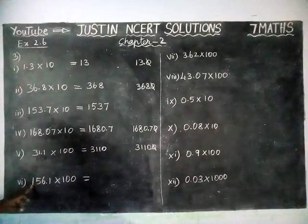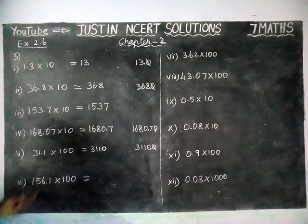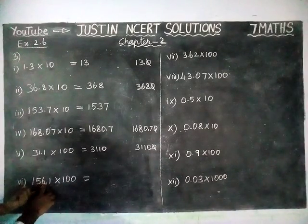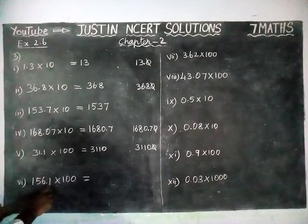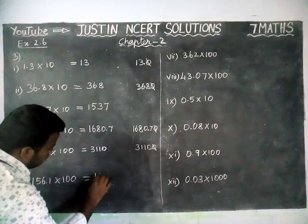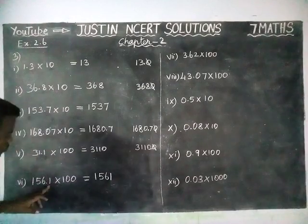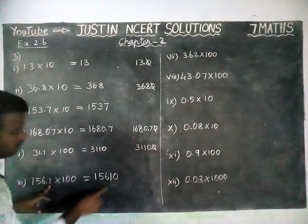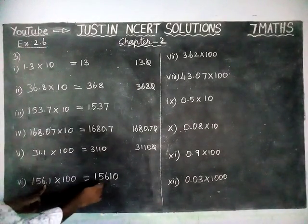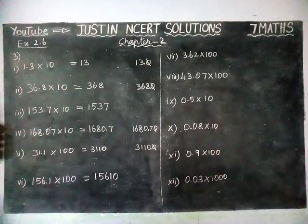Next, 156.1 into 100. Here we have two zeros, so we have to move right side two steps. But here we have only one decimal point, so we will add one zero. We have added one zero — two steps moved. Now 15610 is the answer.